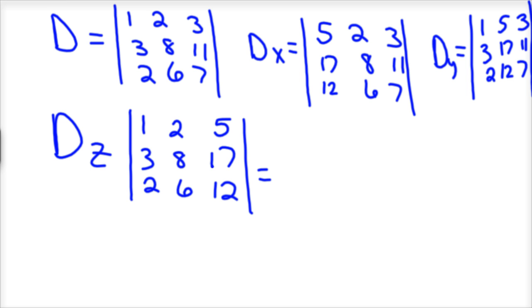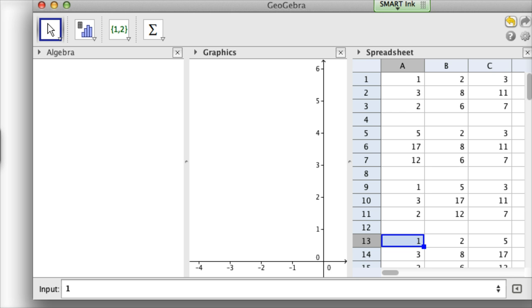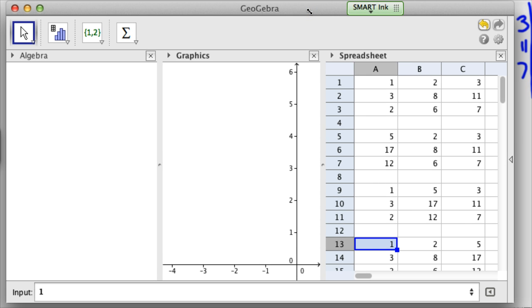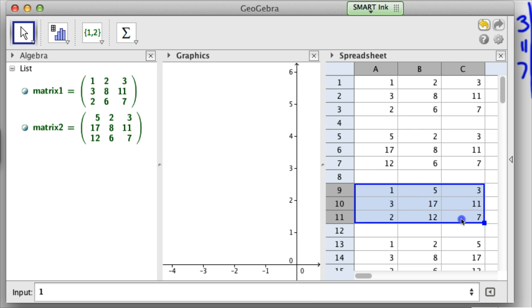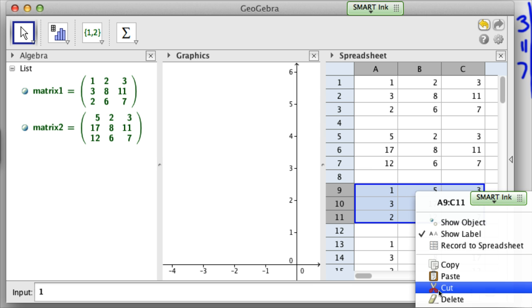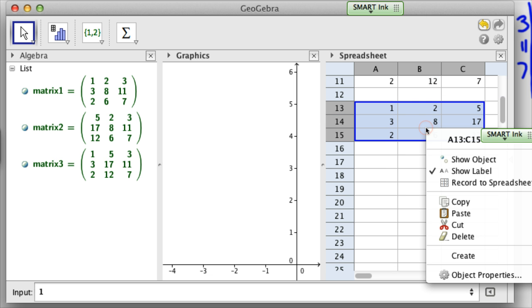Okay, so we're going to use GeoGebra to find these determinants and I've already got it somewhat plugged in. So here in the spreadsheet view you can see that I have these plugged in. Here's my first determinant, my main one, we'll call it matrix 1. So you click and you create a matrix. There it is. Here, I type this is our Dx, create a matrix. There's Dy, create a matrix. And then the final one is Dz, create a matrix.